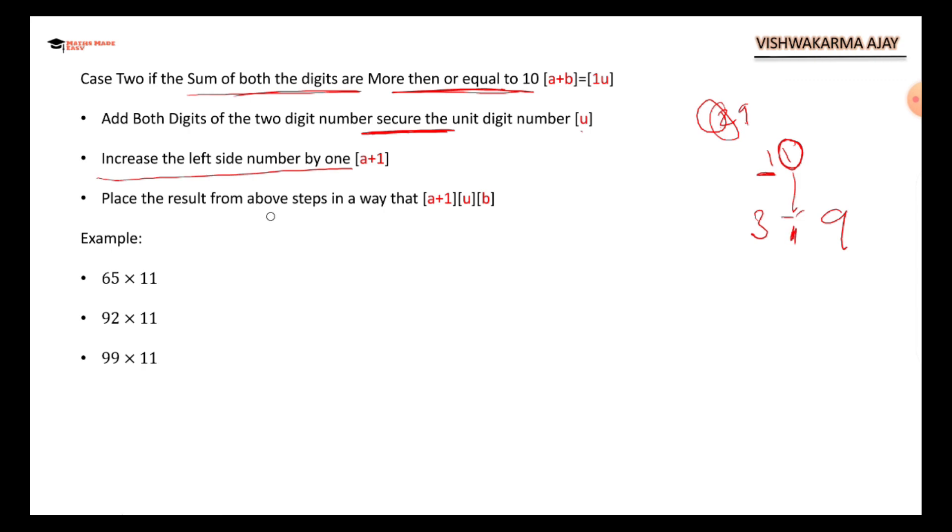Place the result from above step in a way: A plus 1, that is I am going to increase the tens place like I did for 3. I put the U that I already secured from step 1, and B is the same as the last step.